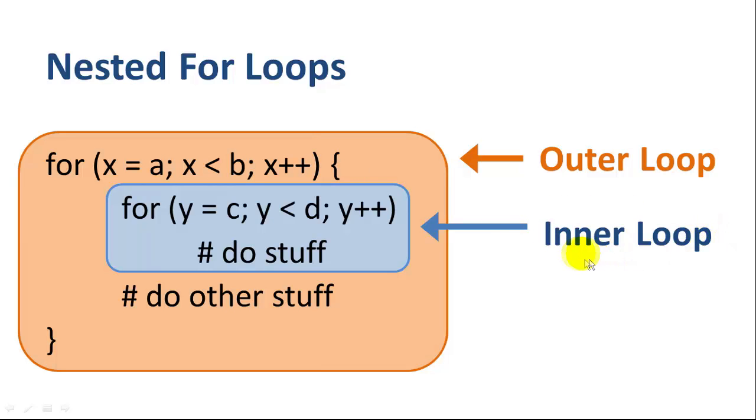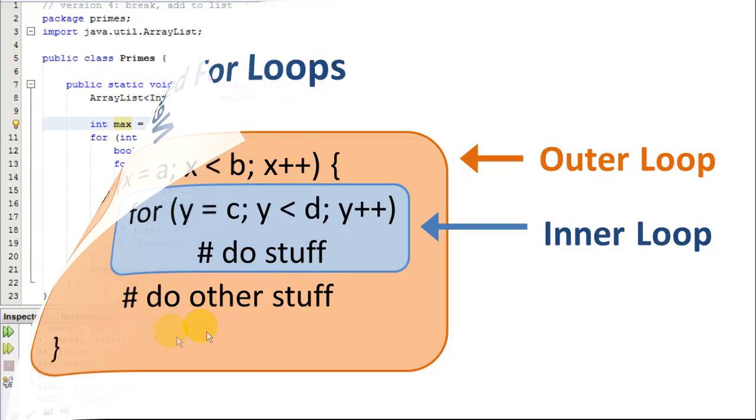This is a common construct in computer programming. We have an inner loop that does most of the work. It's a for loop that iterates using, in this case, y, and we're iterating from c to d. And we have an outer for loop, x, that iterates from a to b. And we do some stuff. Usually there's a comparison or an assignment or some calculations in the inner for loop. And then we do some other stuff in the outer for loop.